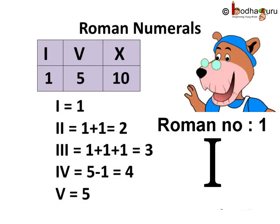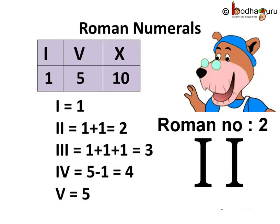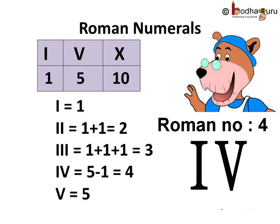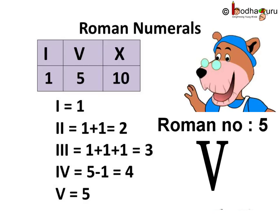So, as we know, 1 is letter I. 2 is 1 plus 1, hence 2 I's. 3 is 1 plus 1 plus 1, hence 3 I's. 4 is equal to 5 minus 1, hence I before capital V.